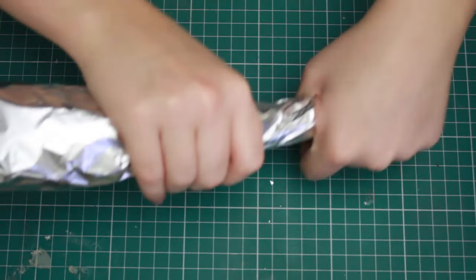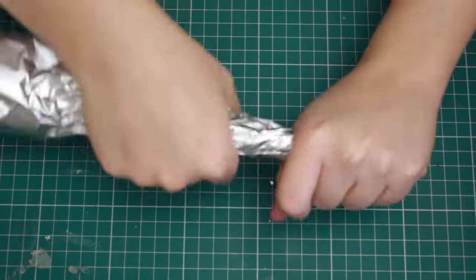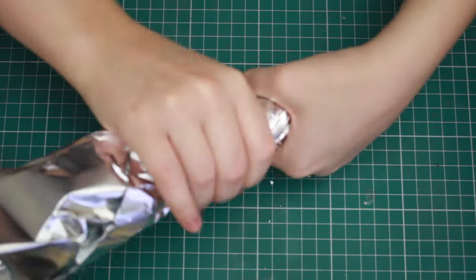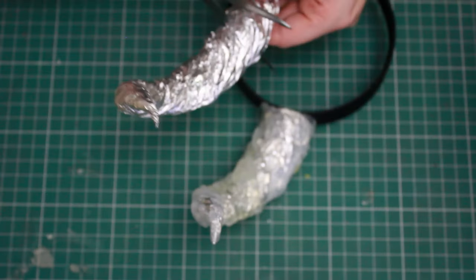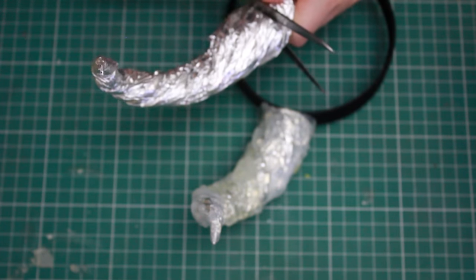Once I've rolled it up, I'm going to start twisting it so you get this really lovely curved pattern going all the way around the horn. Then I'm going to cut it down to size with a pair of scissors and figure out how I want it on the headband.